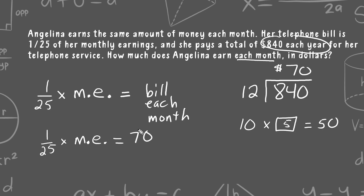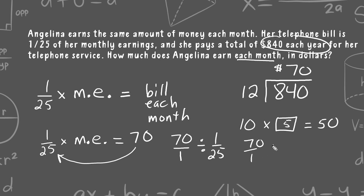We're going to take seventy and divide it by one twenty-fifth: seventy over one, divided by one twenty-fifth. Then we keep, change, and flip — using the reciprocal. We end up multiplying seventy by twenty-five. Writing the zero from seventy at the end and multiplying seven by twenty-five gives one hundred seventy-five; placing that in front of the zero gives us one thousand seven hundred fifty dollars.